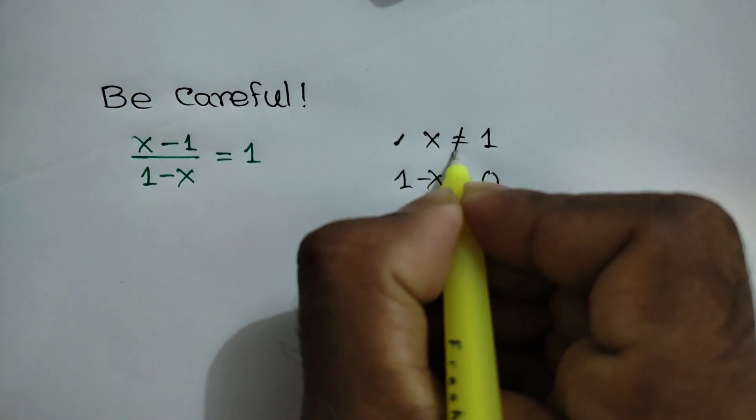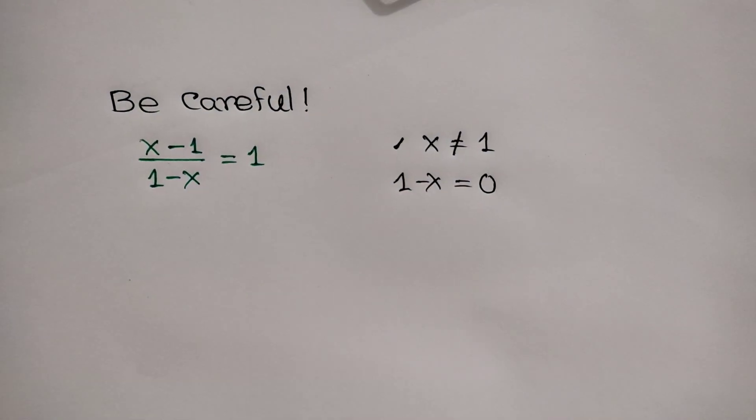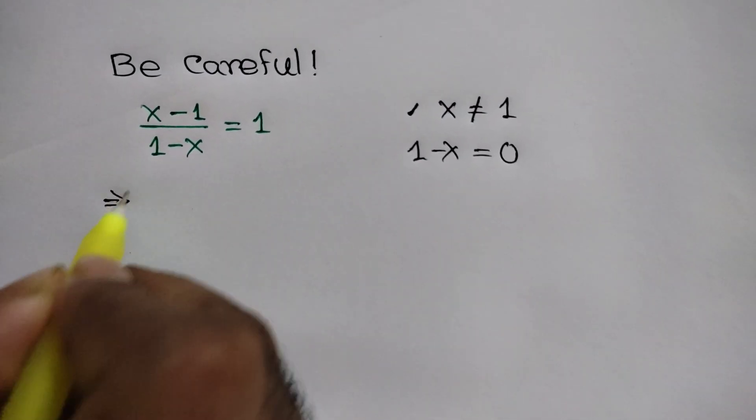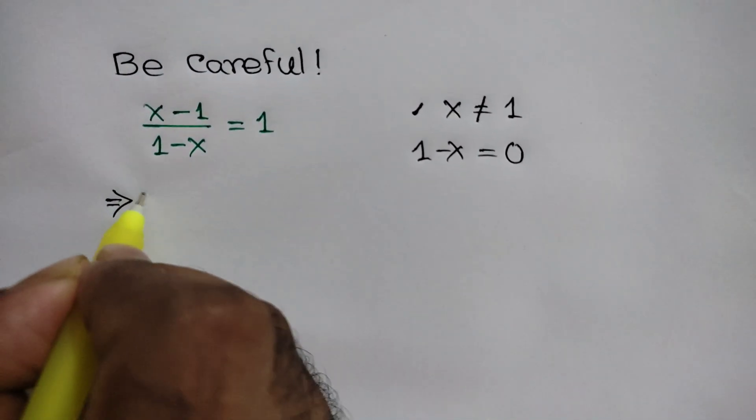Here we can use cross multiplication, so we will get x minus 1 is equal to 1 minus x.